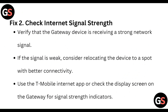Fix two: check the internet signal strength. Verify that the gateway device is receiving a strong network signal. If the signal is weak, consider relocating the device to a port with better connectivity. Use the T-Mobile internet app or check the display screen on the gateway for signal strength indicators.